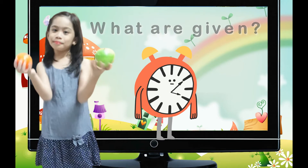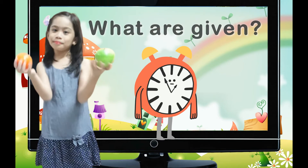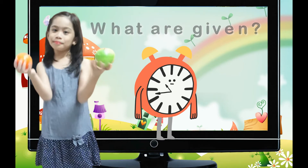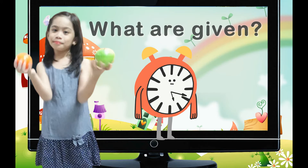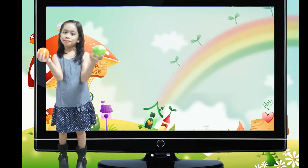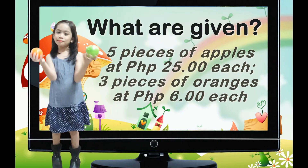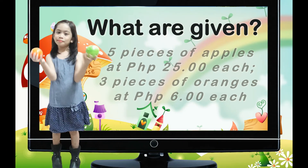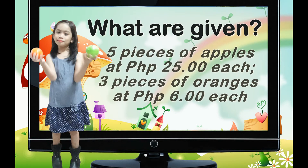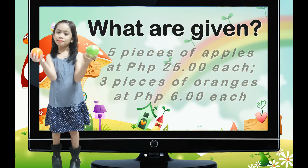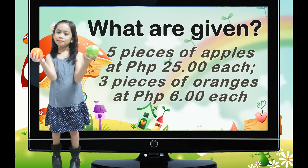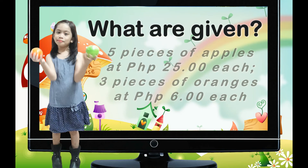What are given? 5, 4, 3, 2, 1 — go! You're right! The answer is 5 pieces of apples at 25 pesos, and 3 pieces of oranges at 6 pesos. Good job!